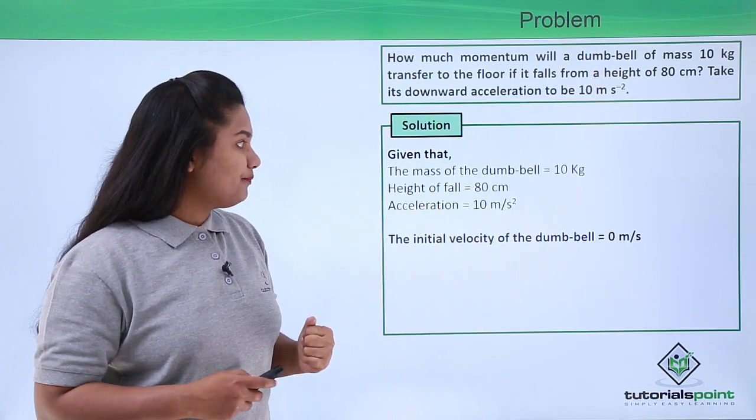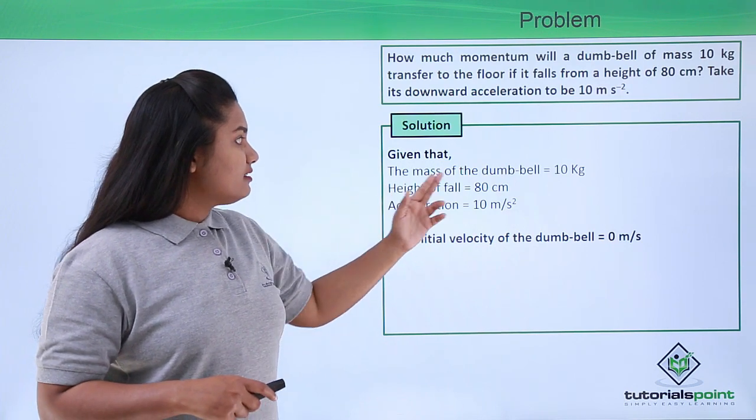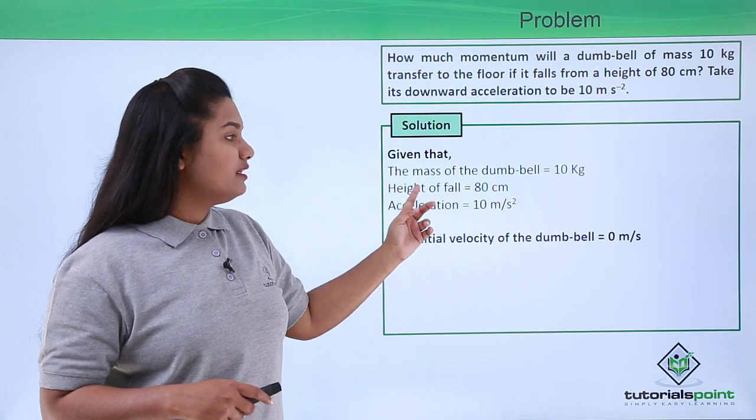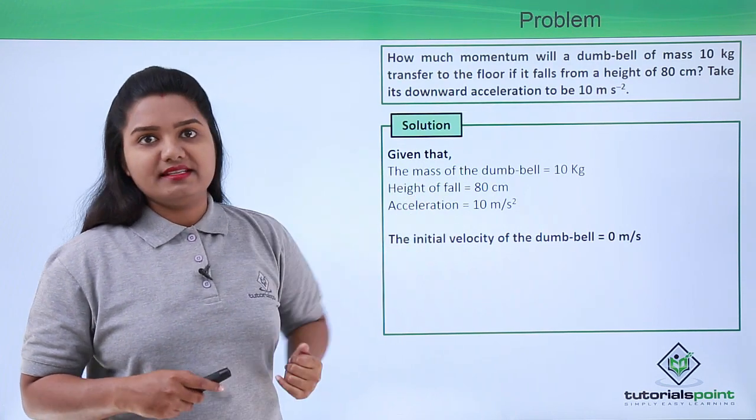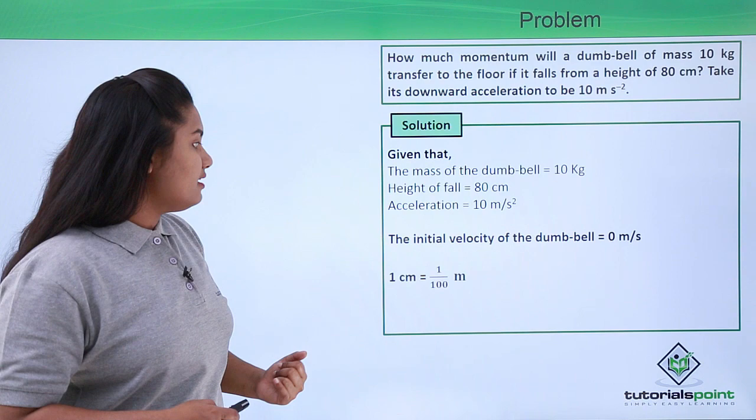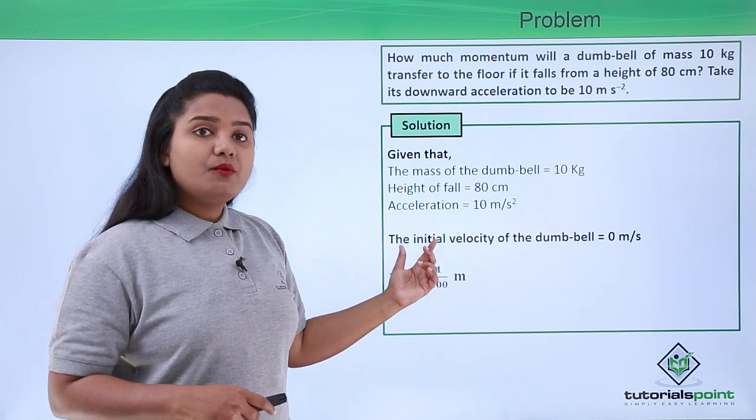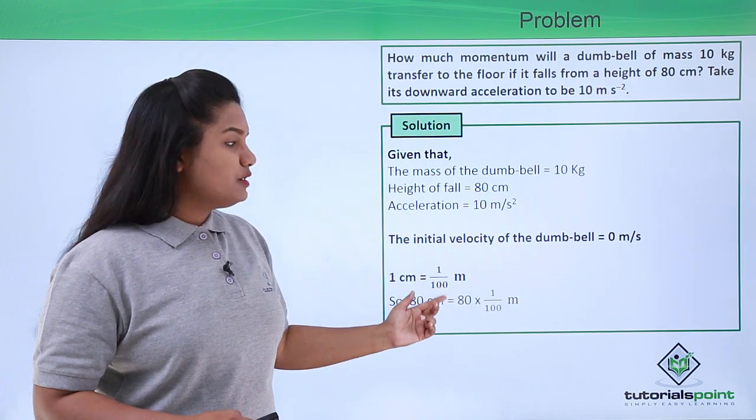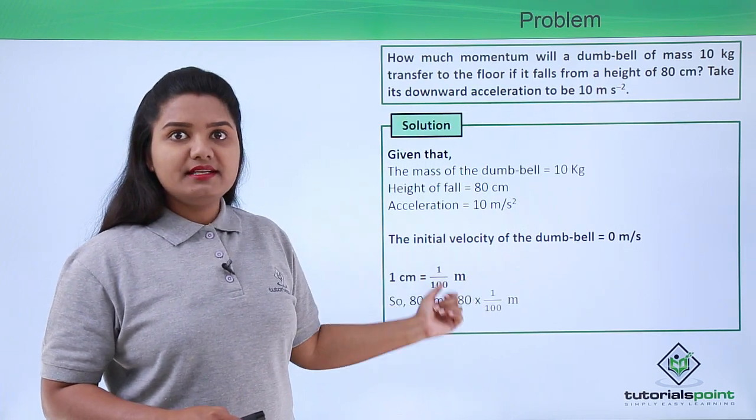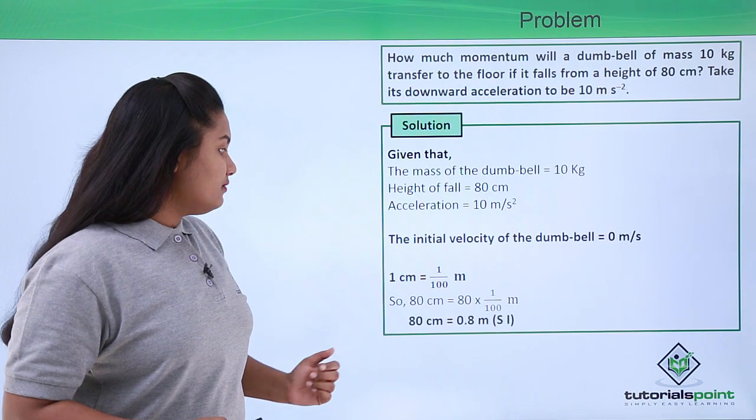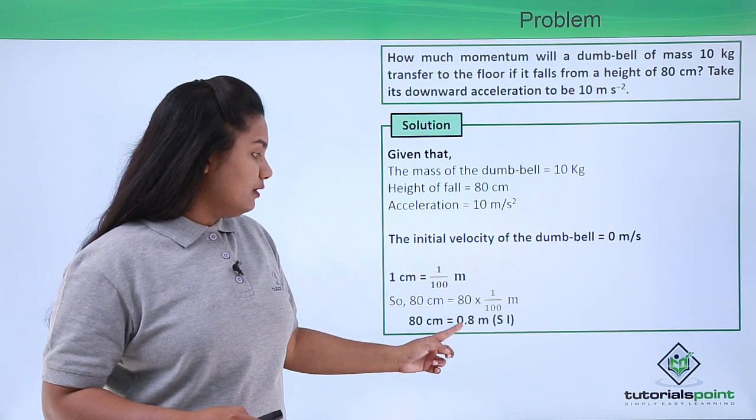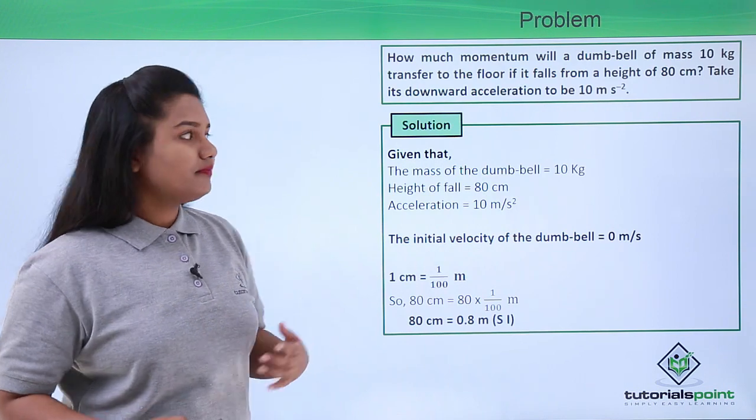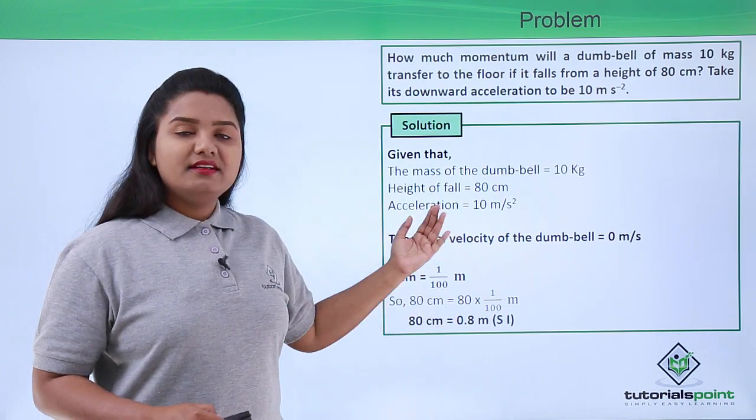Now let us convert this quantity to SI units. One centimeter equals 1/100 meters, so 80 centimeters equals 80 × 1/100 meters, which gives us 0.8 meters. Now that we have this converted to SI, we can proceed to solve the problem.